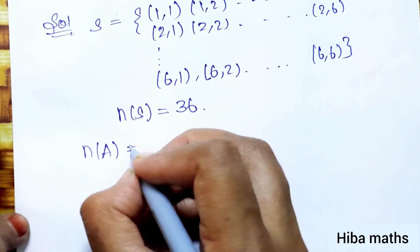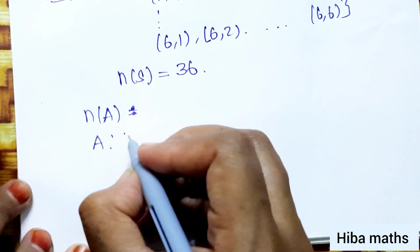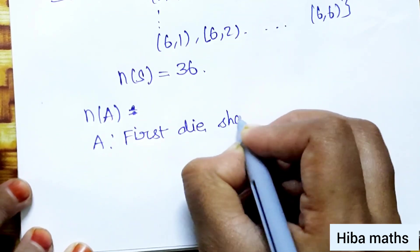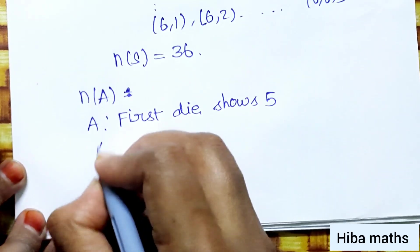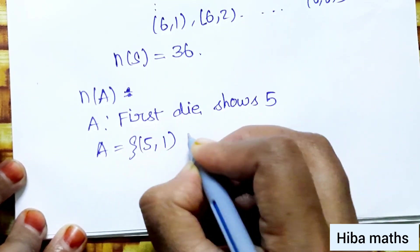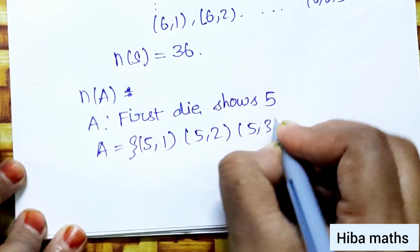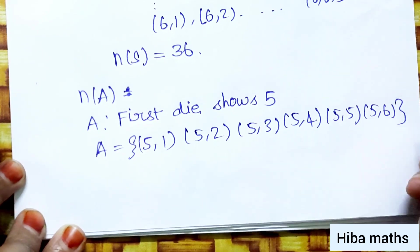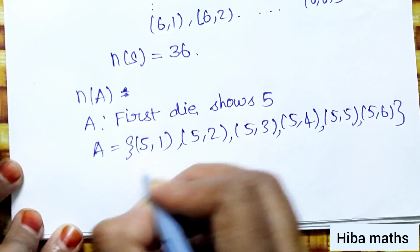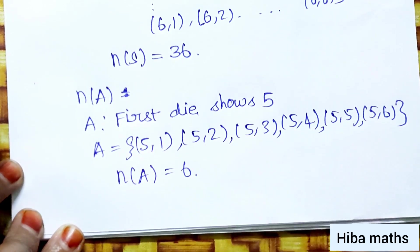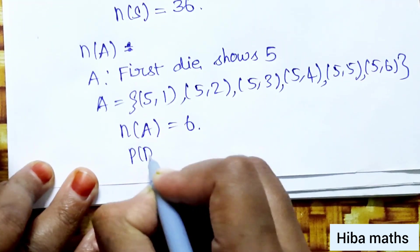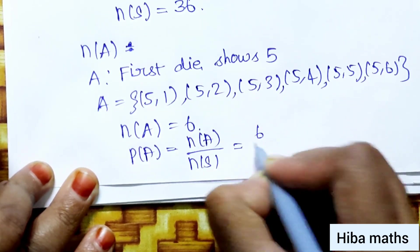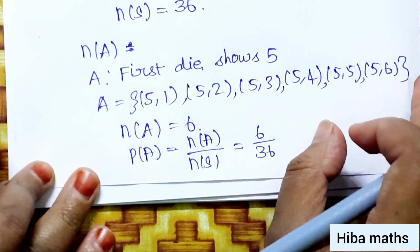Now we find N of A. Event A is the condition that the first die shows 5. So A equals: 5,1; 5,2; 5,3; 5,4; 5,5; 5,6 — we have 6 outcomes, so N of A is equal to 6. Therefore P of A equals N of A by N of S, that is 6 by 36, which is 1 by 6.